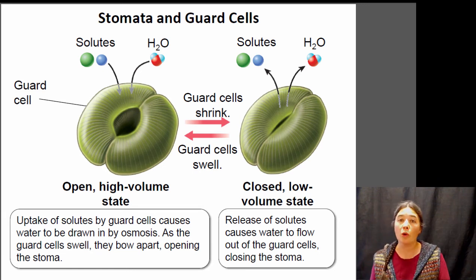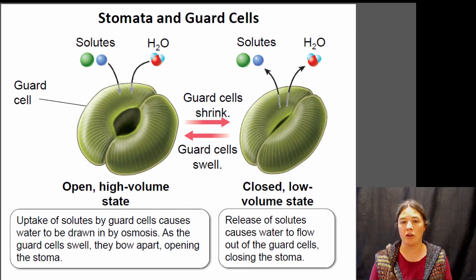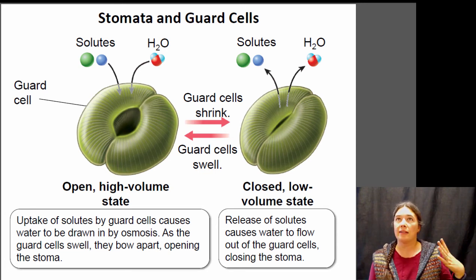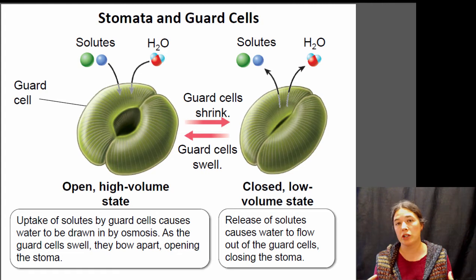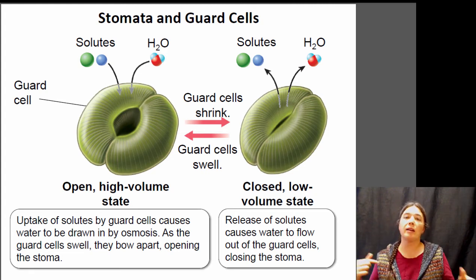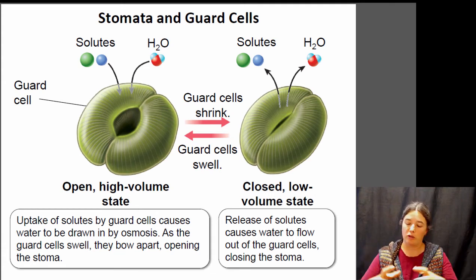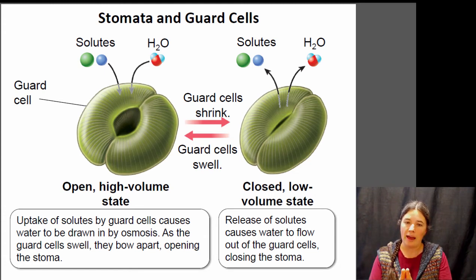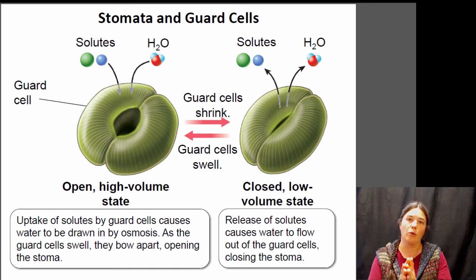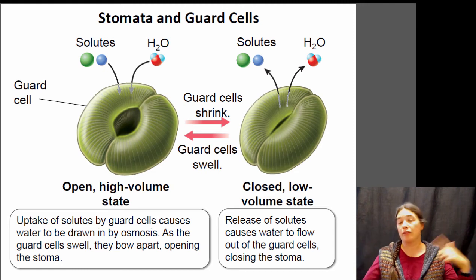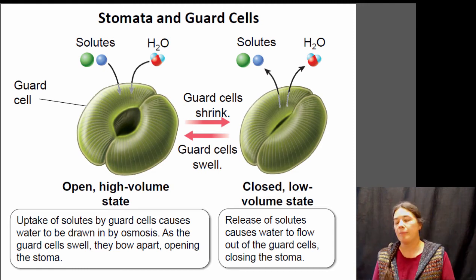Guard cells are controlled through osmosis — the diffusion of water down a concentration gradient across a cell membrane. The cells change the water concentration within themselves by pumping dissolved items in or out. If water moves into the guard cells, they swell up and open the central stomata. If water comes out of the guard cells, they relax and close those stomata. So the plant controls whether stomata are open or closed by inflating or deflating the guard cells.